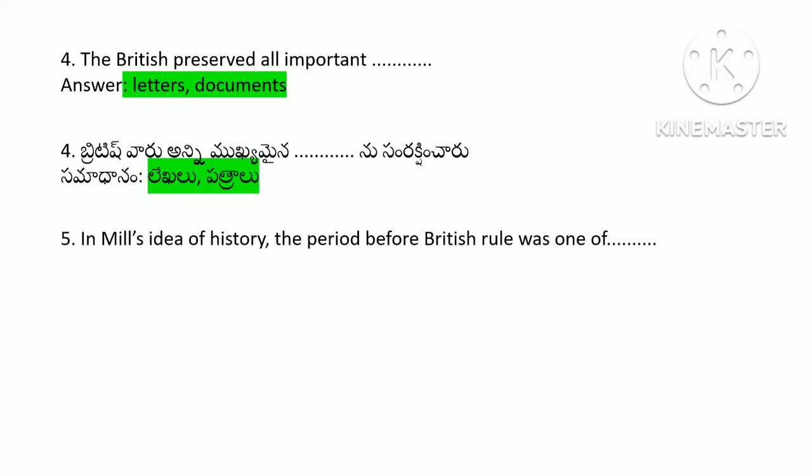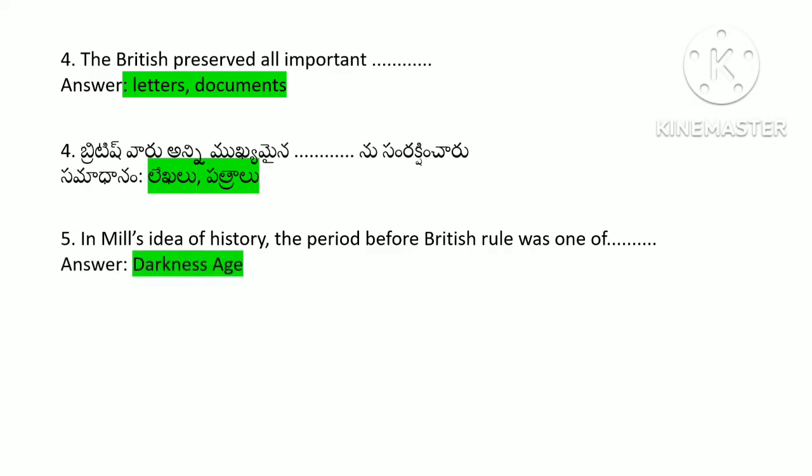In Mill's idea of history, the period before British rule was described as an age of darkness.